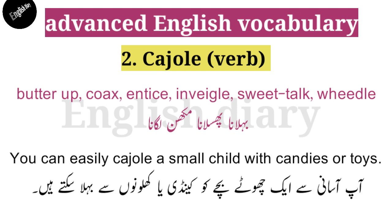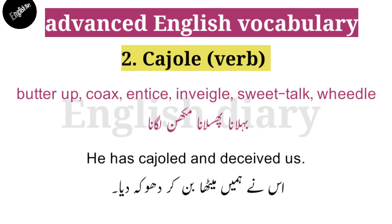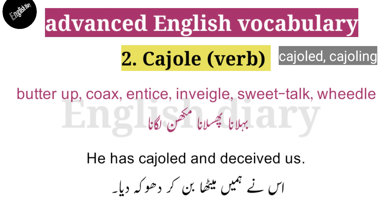For example: You can easily cajole a small child with candies or toys. Another example: He has cajoled and deceived us — us ne hume meethi meethi baatein kar ke dhoka diya. In present tense it is 'cajole,' past tense is 'cajoled,' and continuous is 'cajoling.'